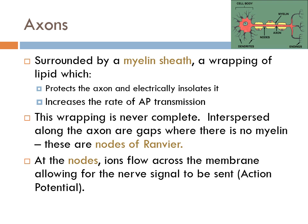If we can make the speed of that action potential faster, then that signal will be sent from the receptors to your spinal cord or brain and then back to the effector much faster. The wrapping of the axon — the myelin sheath — is never complete. There are always gaps in the axon covering, and we call these gaps nodes, or nodes of Ranvier, because Ranvier is the one who figured it out. At the nodes, ions can flow across the membrane, and this allows for the nerve signal to be sent — this allows for the action potential.